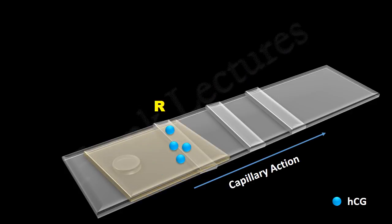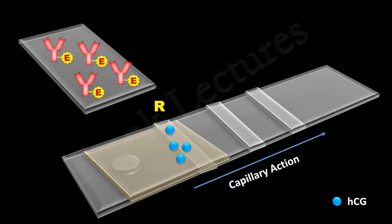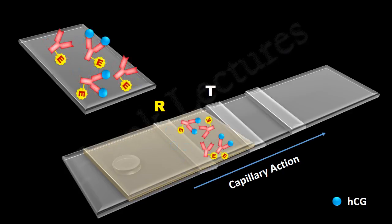The monoclonal, enzyme-conjugated, anti-HCG antibodies present in the reaction zone recognize and bind to the specific epitope on HCG molecules. As we said before, these antibodies are loosely attached to the strip. So, as urine arrives in this zone, these antibodies get detached and travel along with the urine by capillary action.